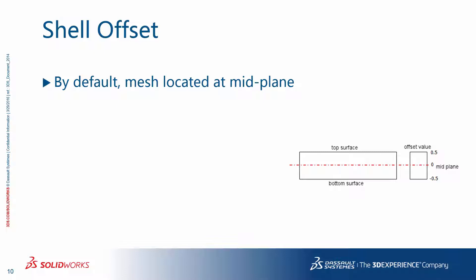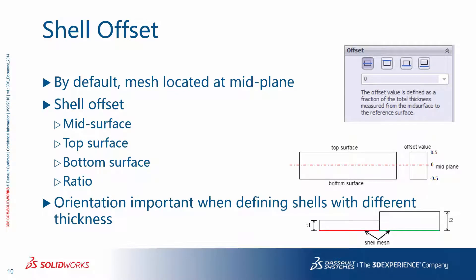Another aspect when dealing with shells is the shell offset definition. When you create your CAD geometry, you may have used surfaces, sheet metal functionalities, or a 3D model with extrusions. By default, the mesh is located at mid-plane. When selecting the surface to be meshed, this assumption may not be valid — as shown in the image for shells with different thicknesses. It is important to account for this using the shell offset option, which gives you the option of mid-surface, top, bottom surface, or an offset ratio to the thickness. There is also an option called Render Shell Thickness in 3D, which helps you avoid mistakes when utilizing the shell offset command.